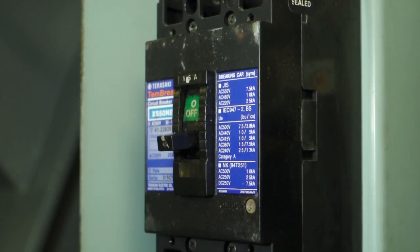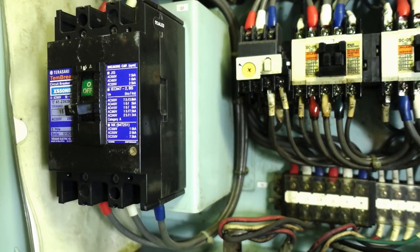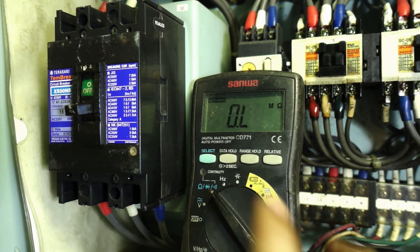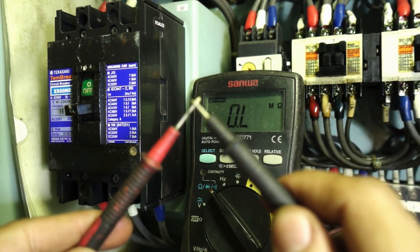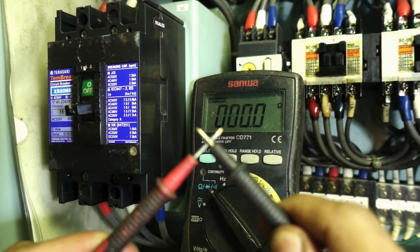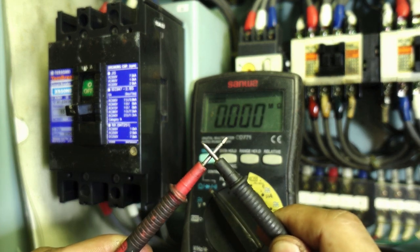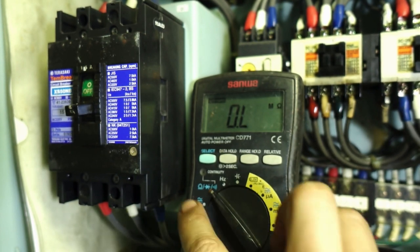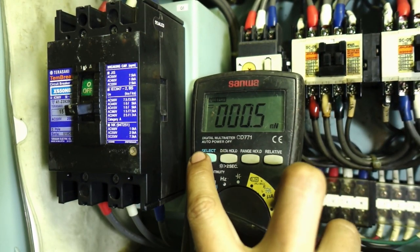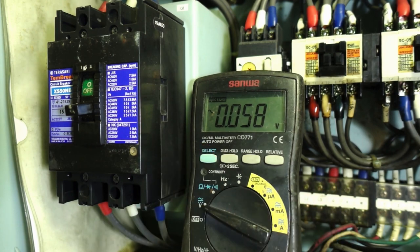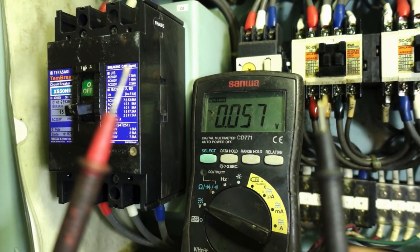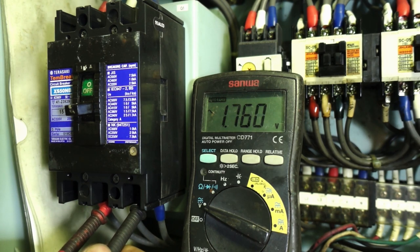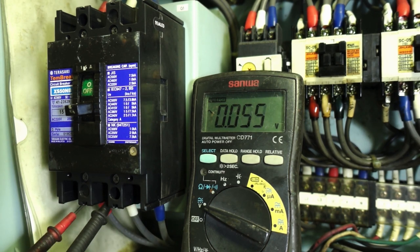I switch off the circuit breaker and I would put a lockout tagout if available. I test my tester to ohmmeter to check continuity in between leads. I switch to voltmeter and check if there's no more voltage in the circuit. The reason I did this is because I don't want to be electrocuted during the process.